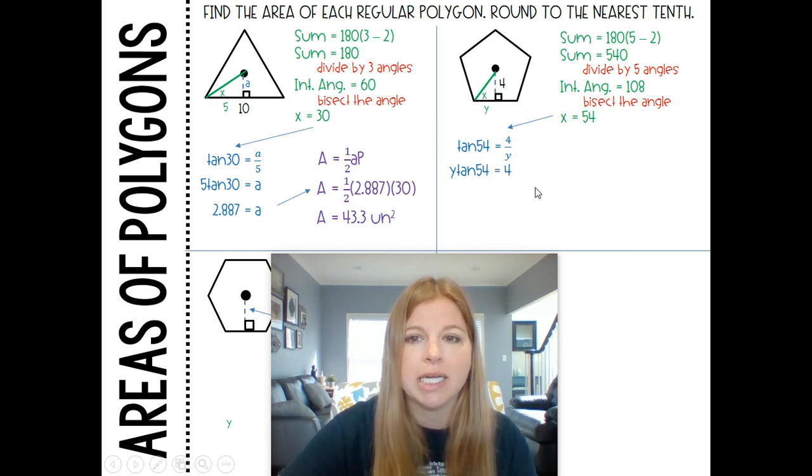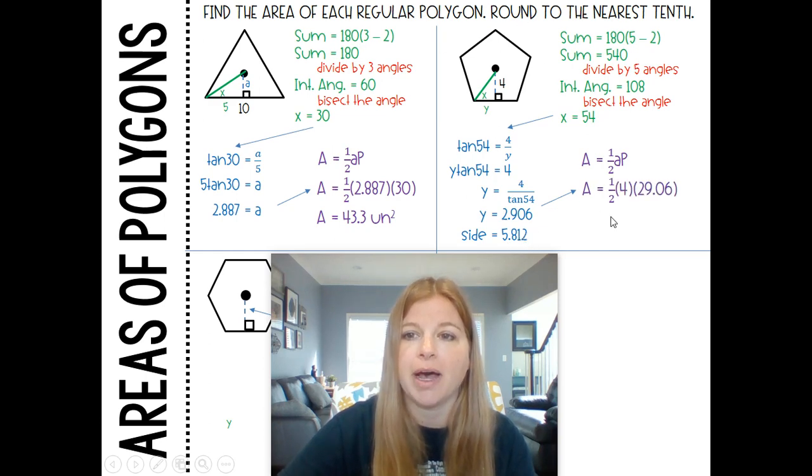I multiply both sides by y, divide by tan 54, I end up getting 2.906. So if that's what y is, I would then need to double it to figure out the entire side. I know my apothem's 4, I would take this side of 5.821, multiply it by 5 to get my perimeter of 29.06. And I end up with 58.12 units squared.